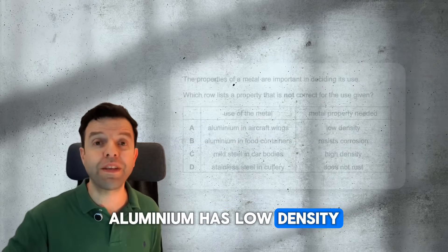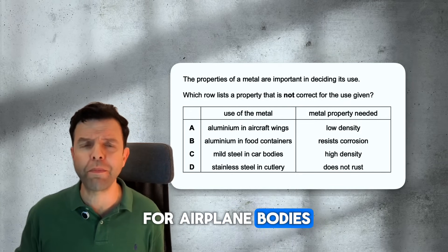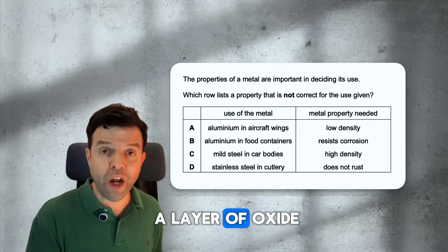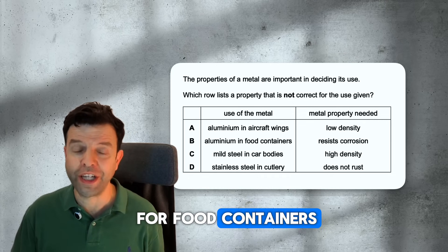Aluminum has low density, that's why it's used for airplane bodies. It's also covered with a layer of hydroxide, that's why it's used for food containers.